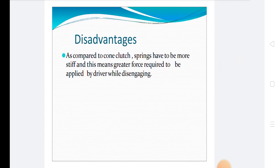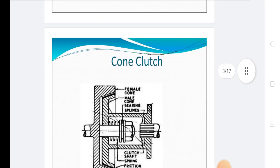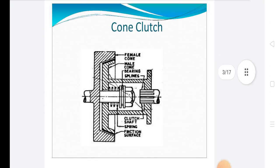As compared to a cone clutch, springs have to be more stiff, and this means greater force is required to be applied by the driver while disengaging. This is the diagram of the cone clutch. In this diagram, there is a female cone, male cone, bearings, splines, clutch shaft, spring, and friction surface.